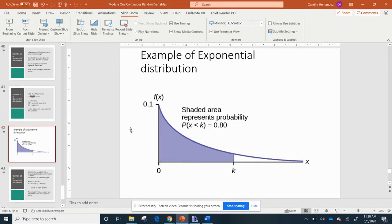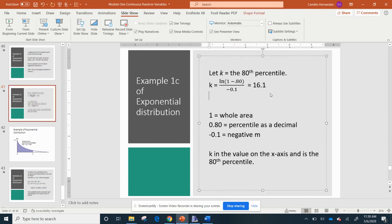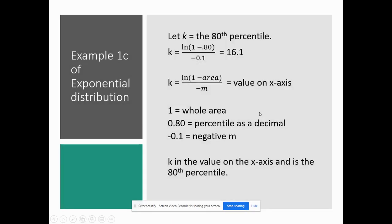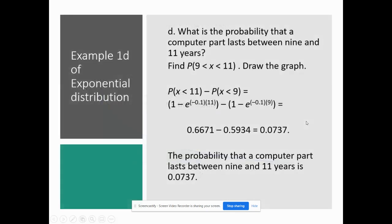If you get confused – I'm going to go back to it – so this is basically what it is. I'm going to write it in a different way so you can see it. So it's going to be LN of 1 minus the area – and this is your negative M – gives you the value on X axis. That's what it is. And that's how you get it.